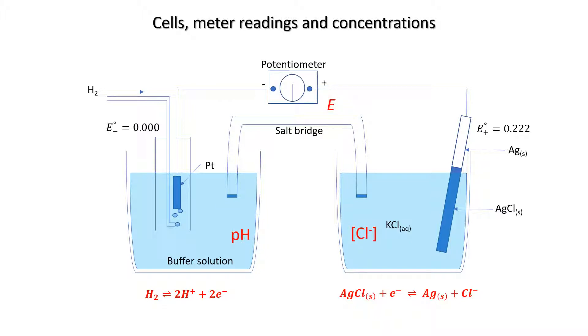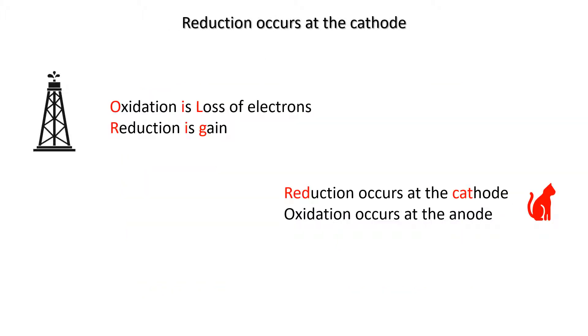Okay, so let's start by considering a simple galvanic cell connected with a salt bridge and a potentiometer. From the standard electrode potentials of the hydrogen electrode on the left of the diagram and the silver-silver chloride electrode on the right of the diagram, we know that the electrons are going to flow from the left side to the right side. Remember OIL RIG: oxidation is loss of electrons and reduction is gain, and that reduction occurs at the cathode. Red cat.